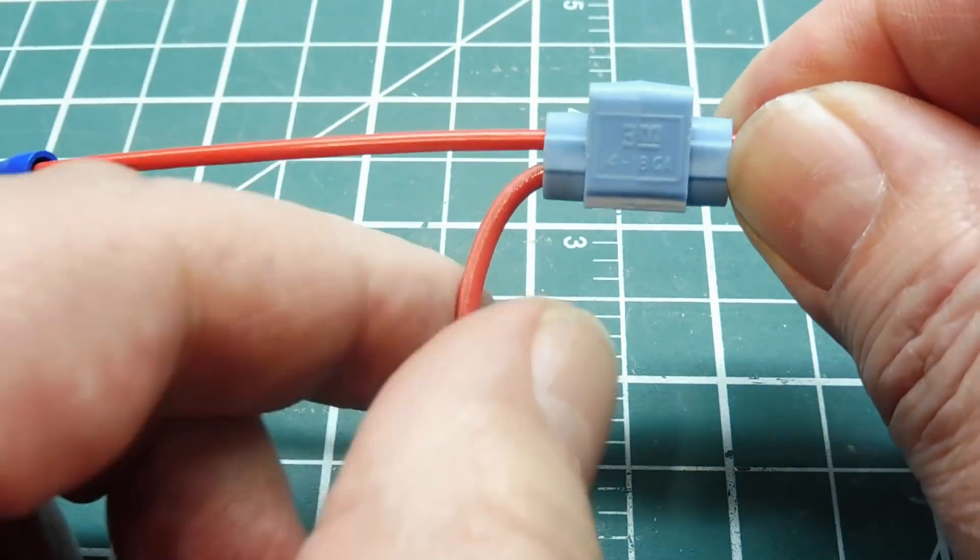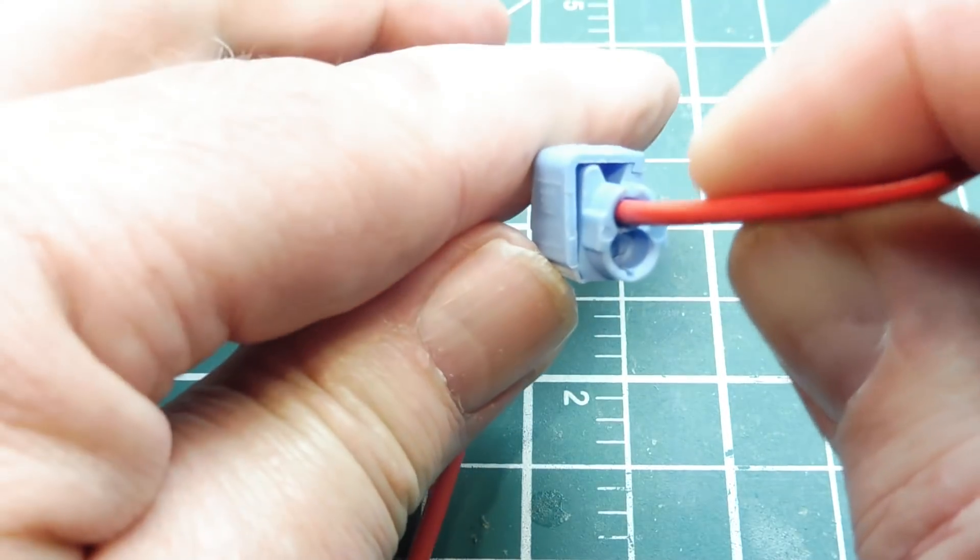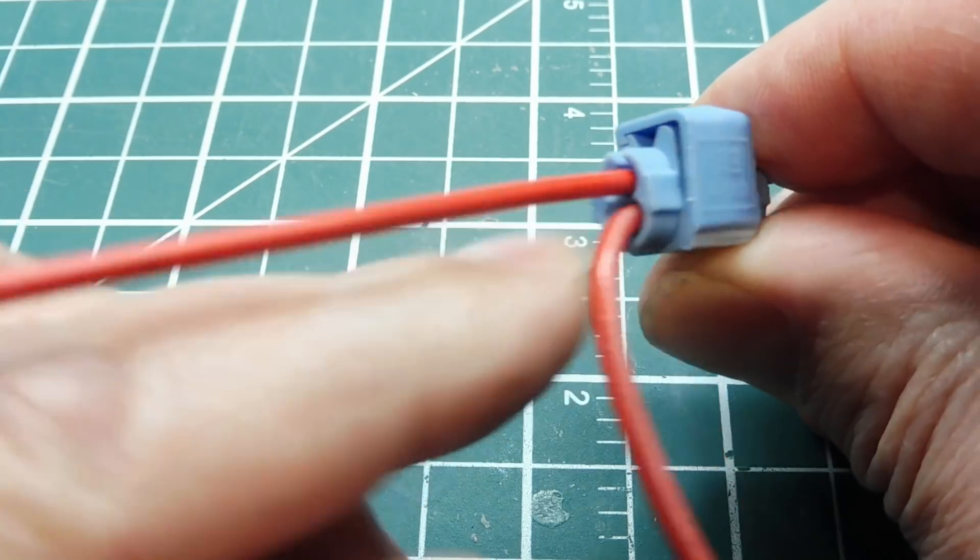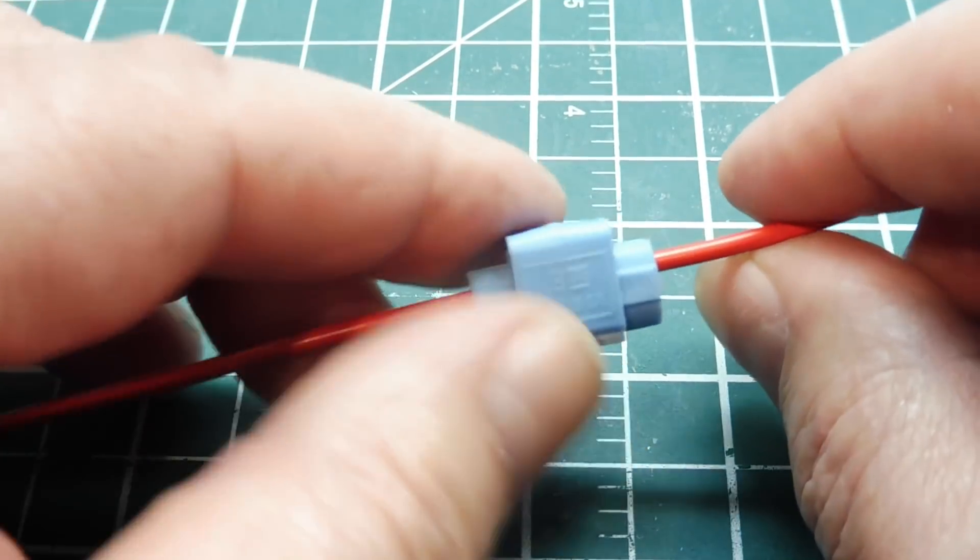This is a permanent connection, it's crimped on, you can see on one side, another side, our tap wire goes into the bottom part of the crimp.